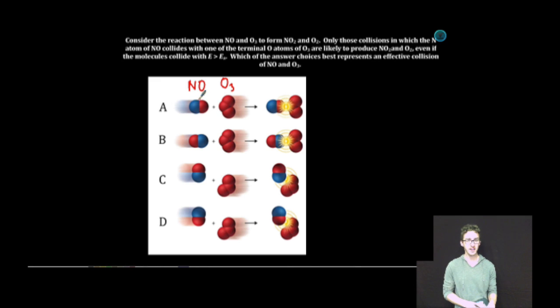Because NO consists of two distinct atoms, the atoms that make up a molecule NO are going to have two different colorations. But the atom of O in NO will have the same coloration of the atoms that make up ozone, because they're all oxygen.